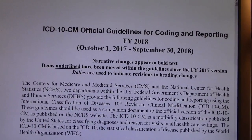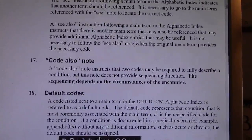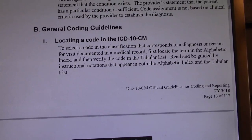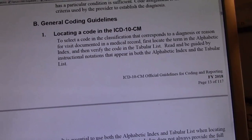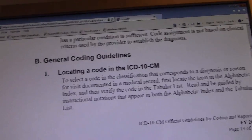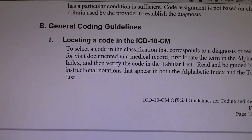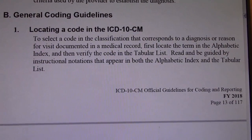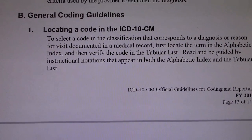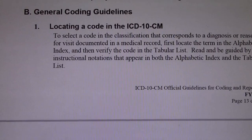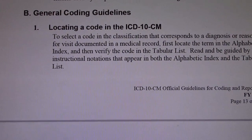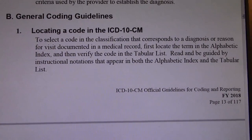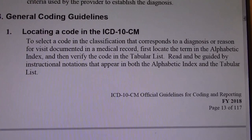We are down at page 13 today — at the bottom of page 13, which starts with B. That's the key area we're going to cover today: general coding guidelines. I think this is going to answer a lot of questions that I get where students aren't getting the correct answer — they're not getting the complete answer. The key here is how to locate a code. Number one, locating a code in the ICD-10-CM: to select a code in the classification that corresponds to a diagnosis or reason for visit documented in a medical record.